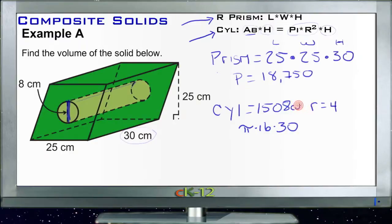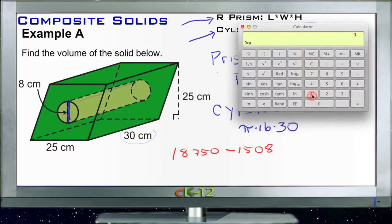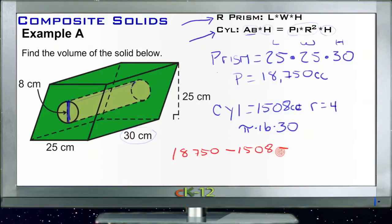So we have our cylinder is 1508 cubic centimeters. So we have 18,750 cubic centimeters for the volume of our prism, and 1508 cubic centimeters for the volume of our cylinder. So the overall volume is going to be 18,750 minus 1508. So use our calculator again. 18,750 minus 1508, 17,242. So we have 17,242 cubic centimeters. That's going to be the volume of the shape minus that little cylinder sucked out of the middle.